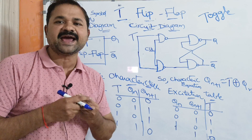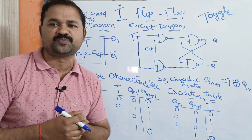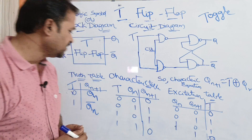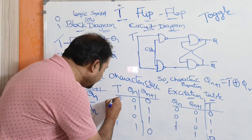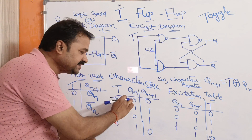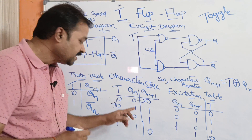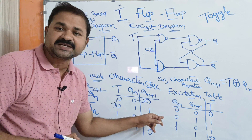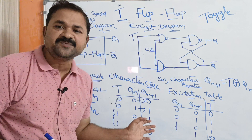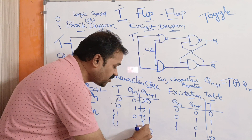Now let us see the characteristic table. It accepts two inputs T and Q(n), and produces Q(n+1) as the output. With two inputs we have four combinations: 00, 01, 10, 11. If T=0 and Q(n)=0, next state is 0; if T=0 and Q(n)=1, next state is 1 — because T=0 means no change. If T=1 and Q(n)=0, next state is complement of 0, which is 1. If T=1 and Q(n)=1, next state is complement of 1, which is 0.